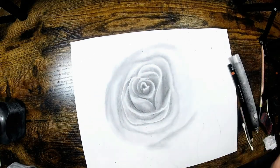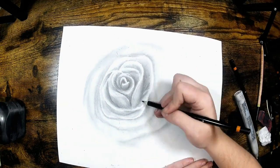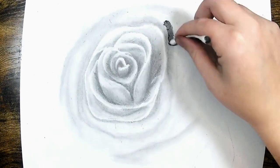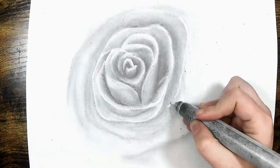Instead you can use Q-tips, paint brushes, cotton balls, paper towels, cotton pads, tissues, and blending stumps. These tools work very well for blending and manipulating graphite.